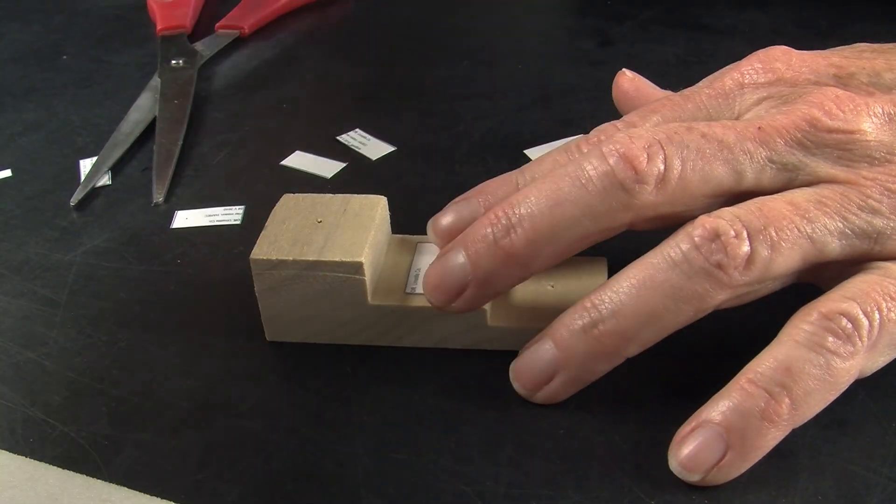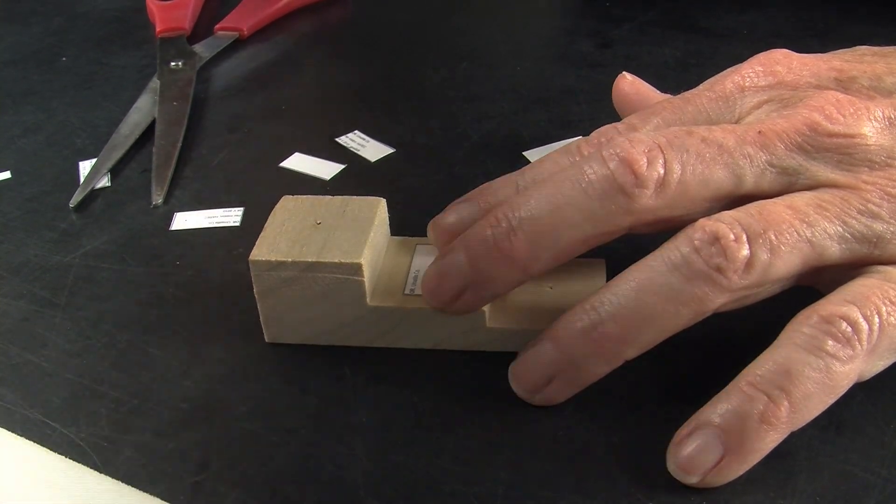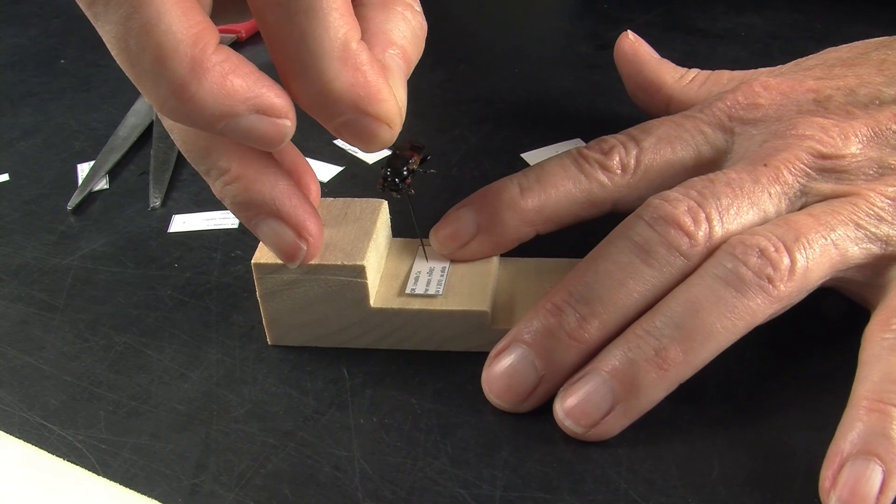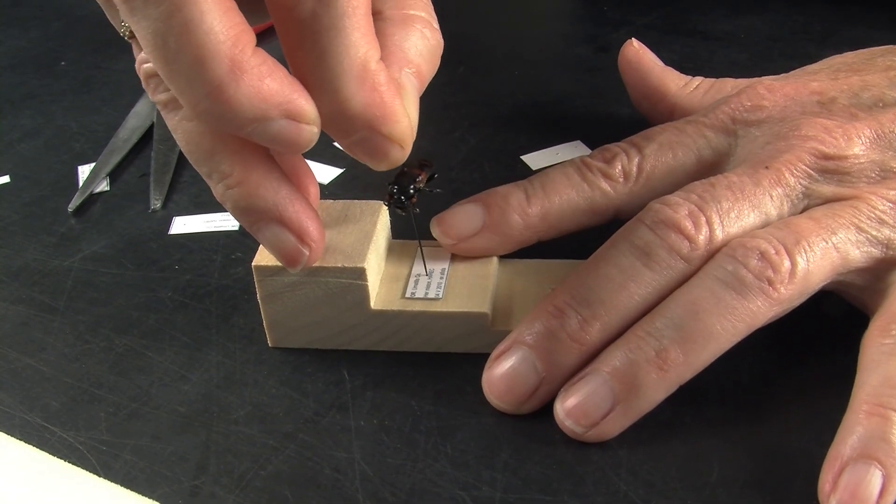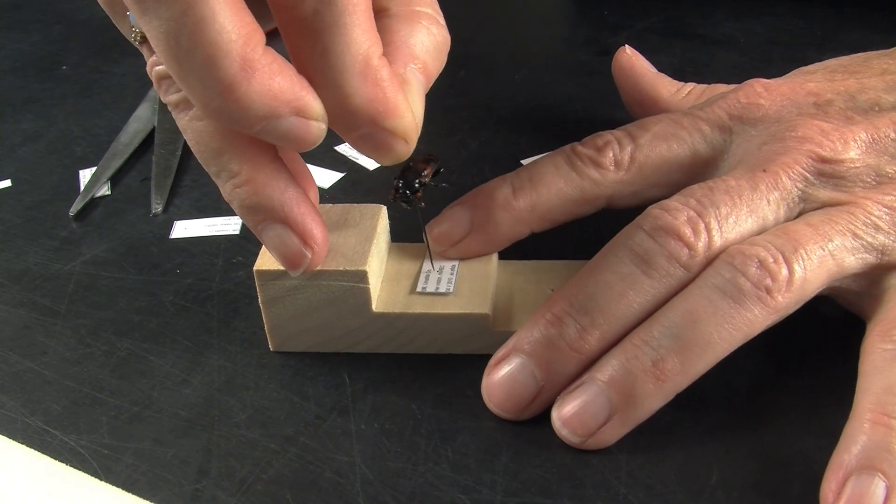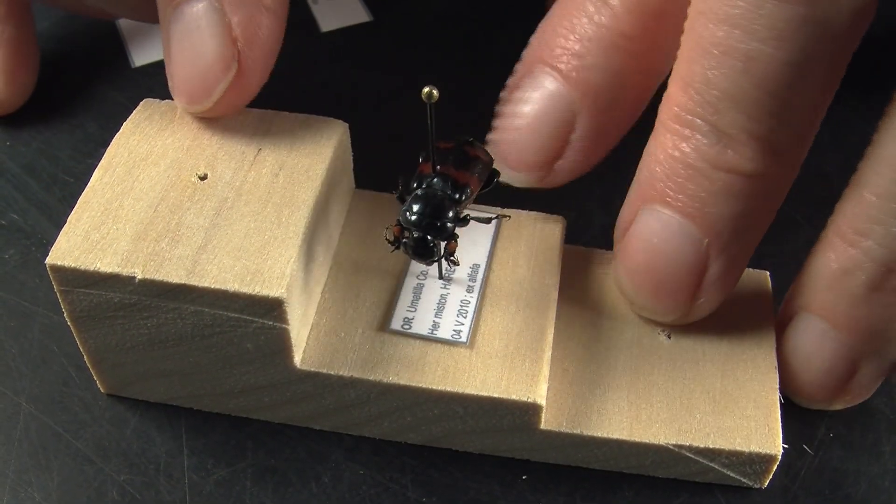This allows us to conserve space in our box. We'll just pin right through here and set our insect right in the middle of the label.